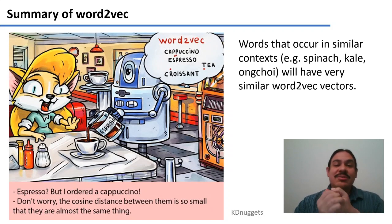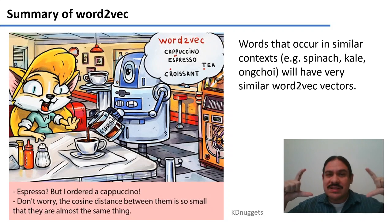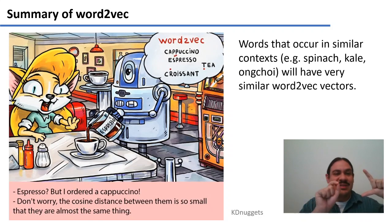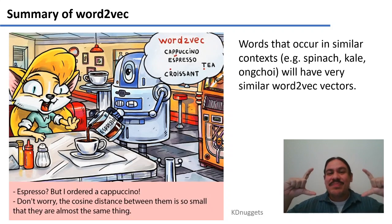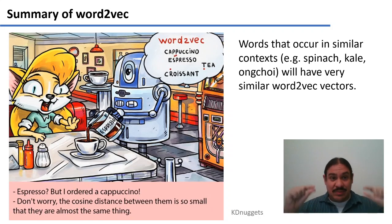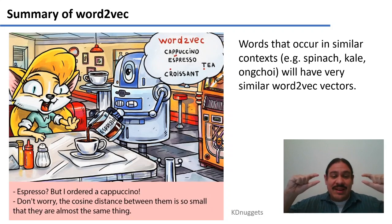Two words like cappuccino and espresso, for example, are always going to have similar contexts. They're always going to be accompanied by words like cup, hot, milk, almond, coffee shop, pumpkin spice, and so forth. So, because the contexts of these two words are very similar, their word2vec values are also going to be very similar. These two vectors are going to be closer together and are going to have more similarity.